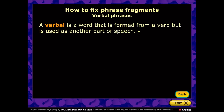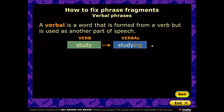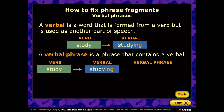Let's start with verbal phrases. In grammar, a verbal is a word formed from a verb — hence 'verb' at the beginning of 'verbal' — but it's used as another part of speech, so it's not acting as a verb in the sentence. If we take the verb 'study,' add '-ing' to the end, and connect it with the noun 'deserts,' we have a verbal phrase. 'Studying deserts' by itself is a fragment.